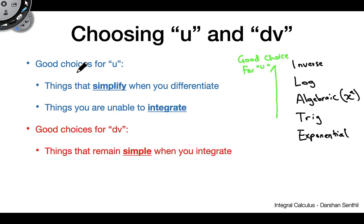Let's do a quick reminder of what makes a good choice for u and what makes a good choice for dv — that's going to be very important. Good choices for u are things that simplify when you differentiate, so these usually tend to be polynomials — like x squared, x cubed, etc. When you take derivatives of polynomials, they get nice and simplify down.